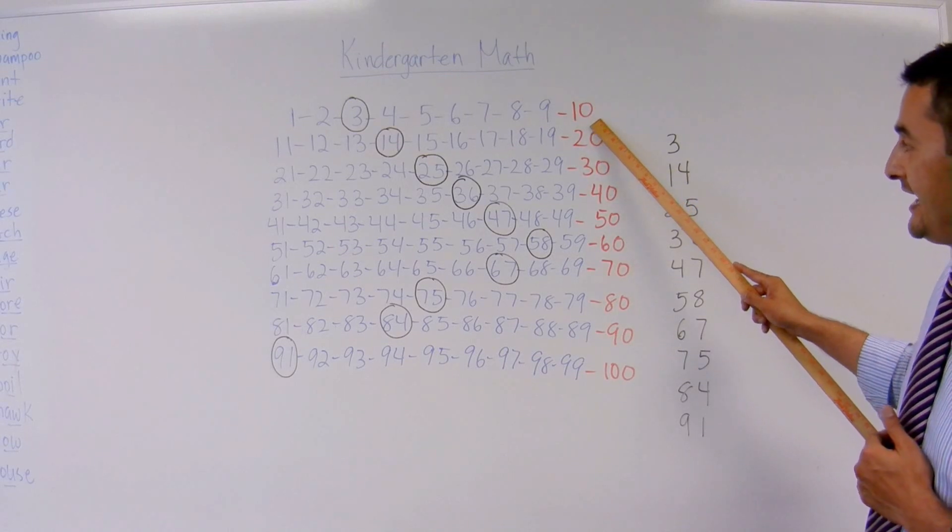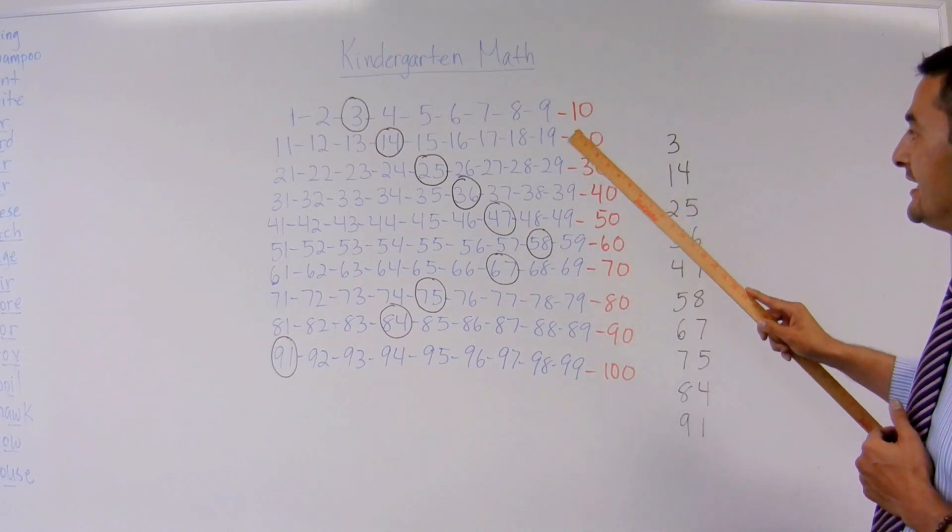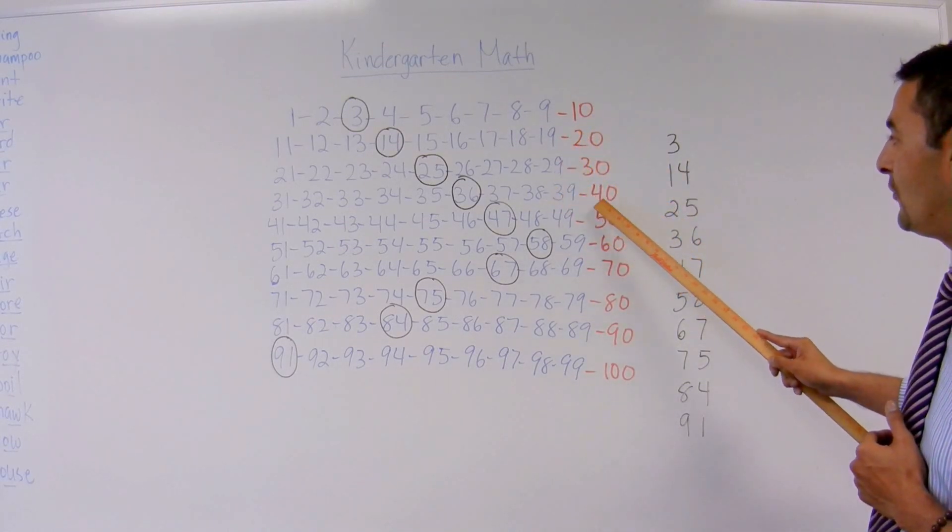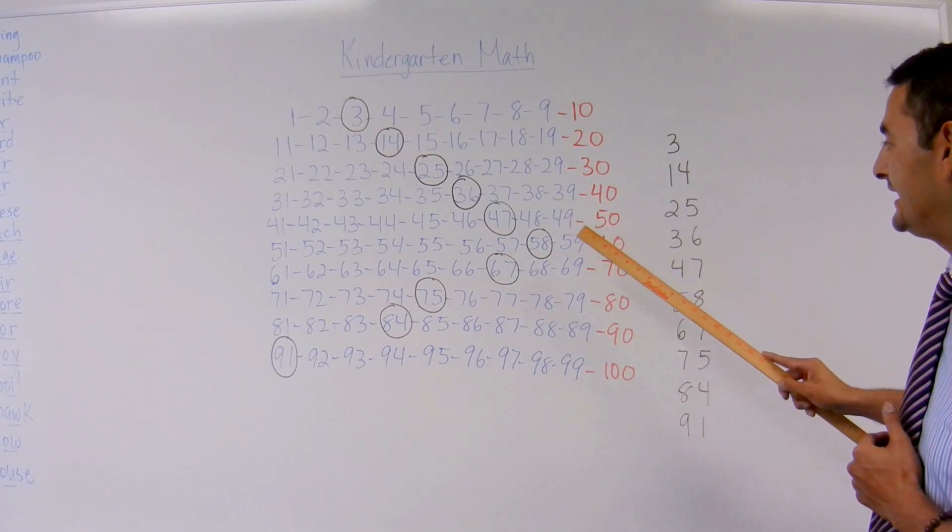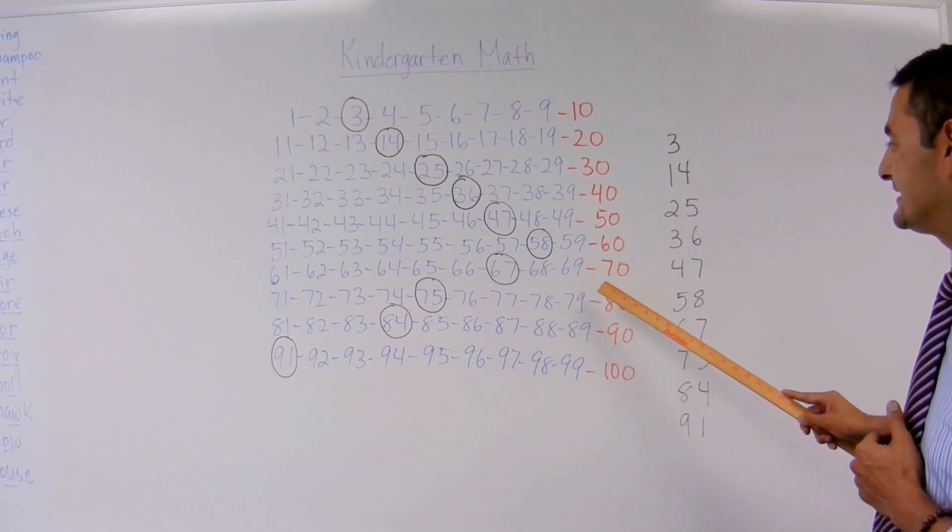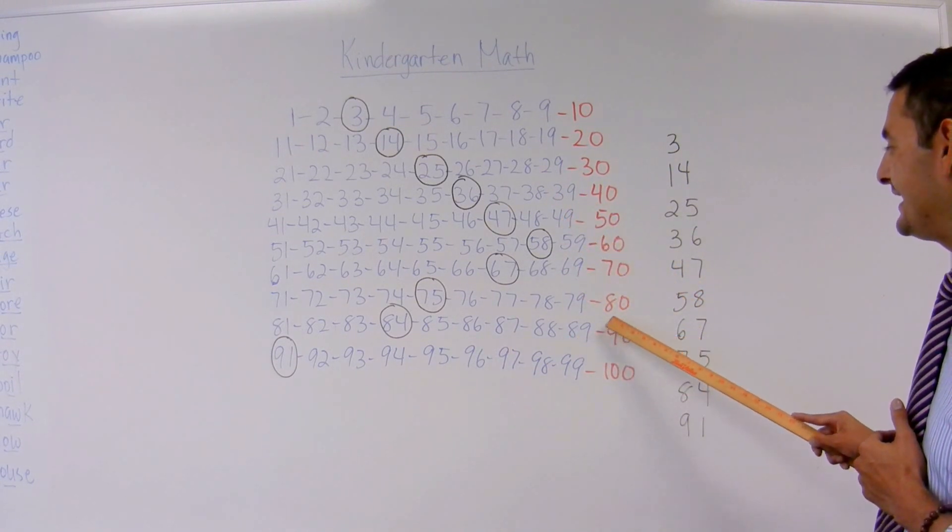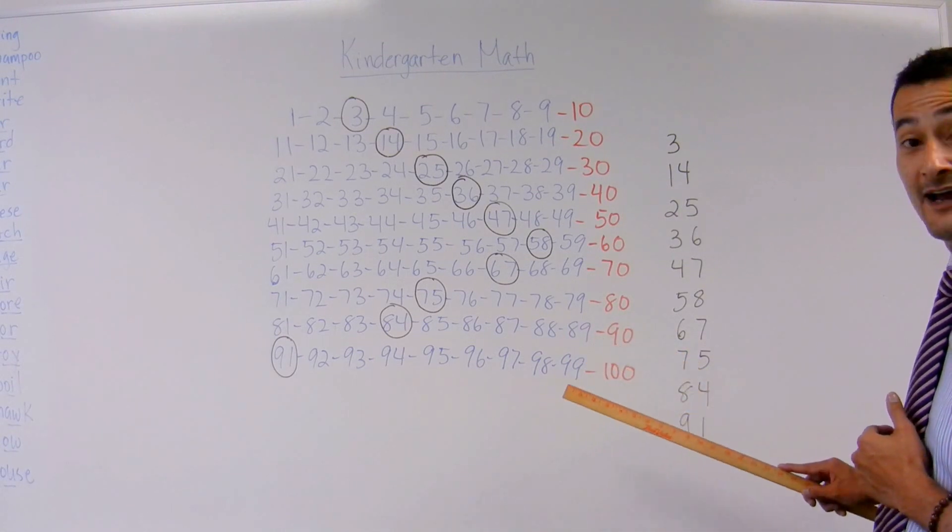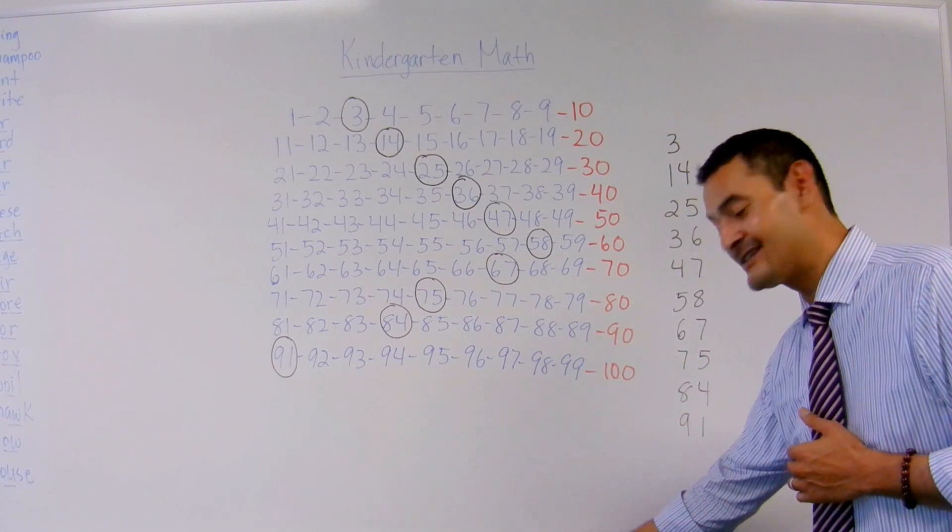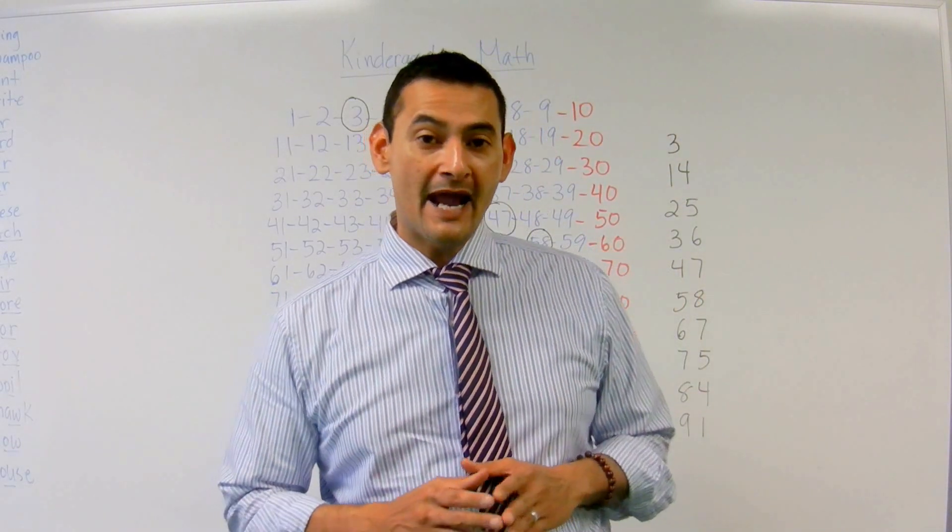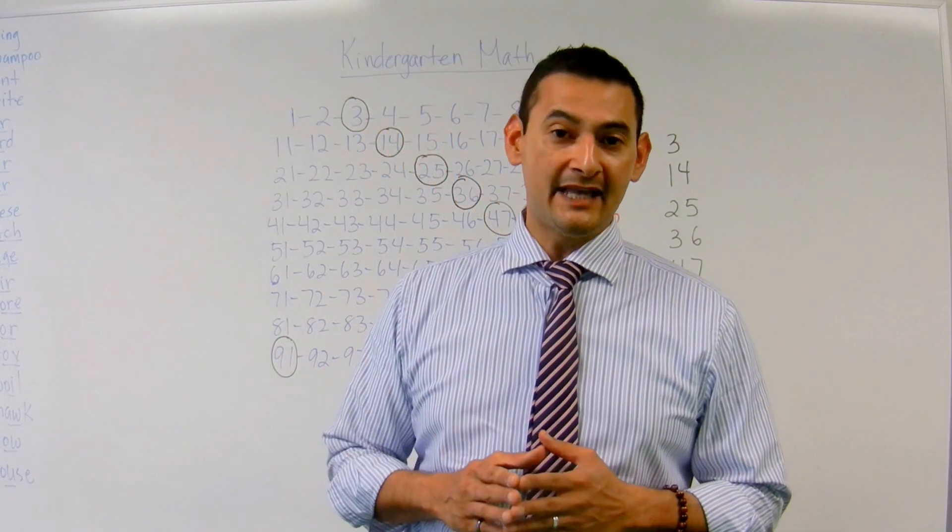So let's go ahead and let's count by tens. Ready? 10, 20, 30, 40, 50, 60, 70, 80, 90, 100. Awesome, boys and girls.